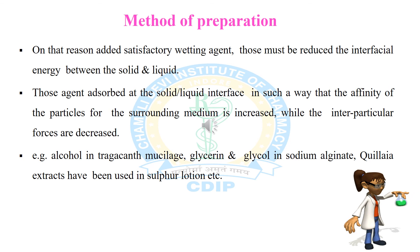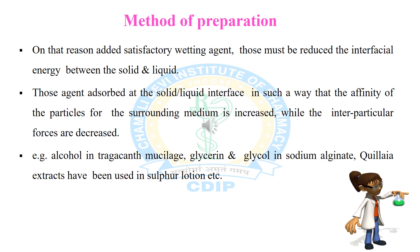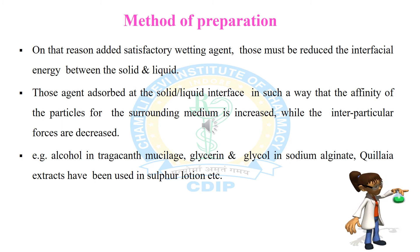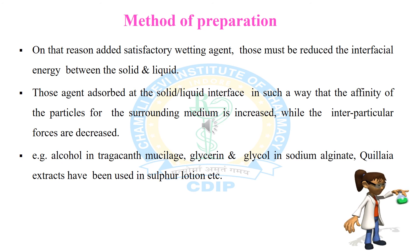Examples of wetting agents used in formulation include alcohol, used in the formulation of tragacanth mucilage. Glycerine and glycerol in sodium alginate, and quillaia extract have been used in sulfur lotion.